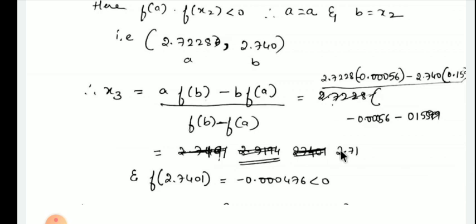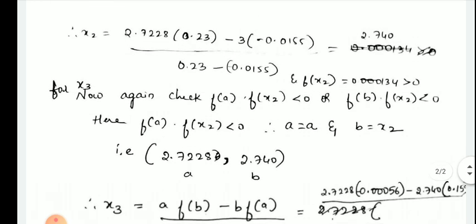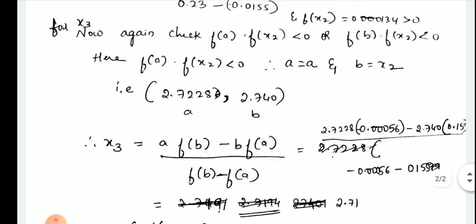You get the answer as x3 = 2.7140, and f(2.7140) = minus 0.000476. They told you to carry out 3 iterations, so we stop at x3. If they ask for 4 iterations, do one more by checking f(a)·f(x3) or f(b)·f(x3) less than 0, then substitute the corresponding values into the Regula Falsi formula to get the next answer. Thank you.